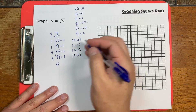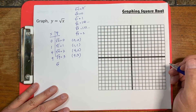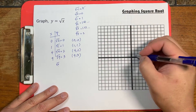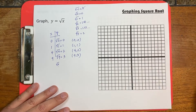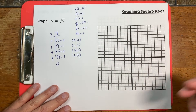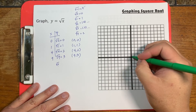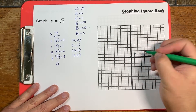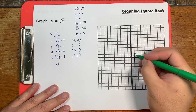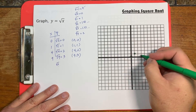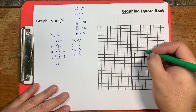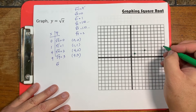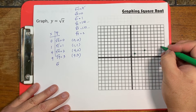So let's look at this. The point (0, 0) is here. (1, 1) is here. (4, 2) — counting to x equals 4, y equals 2 — would be here. And (9, 3) would be over here.